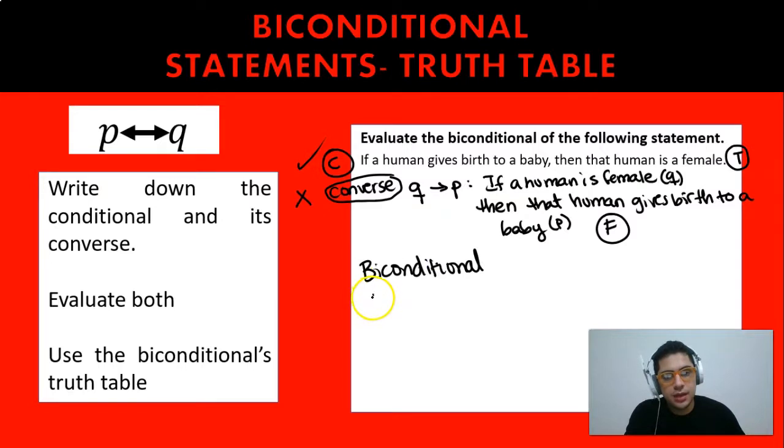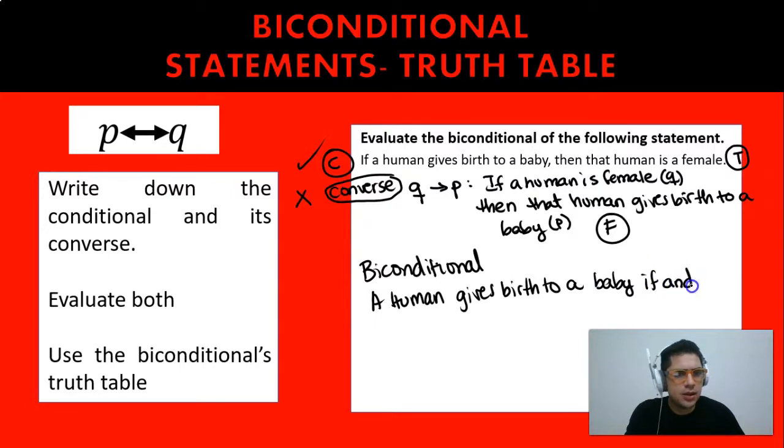So the biconditional, which is a human is female if and only if that human gives birth to a baby, is false. And we have proved that because the conditional and the converse are not both true or not both false, that this biconditional statement is false.